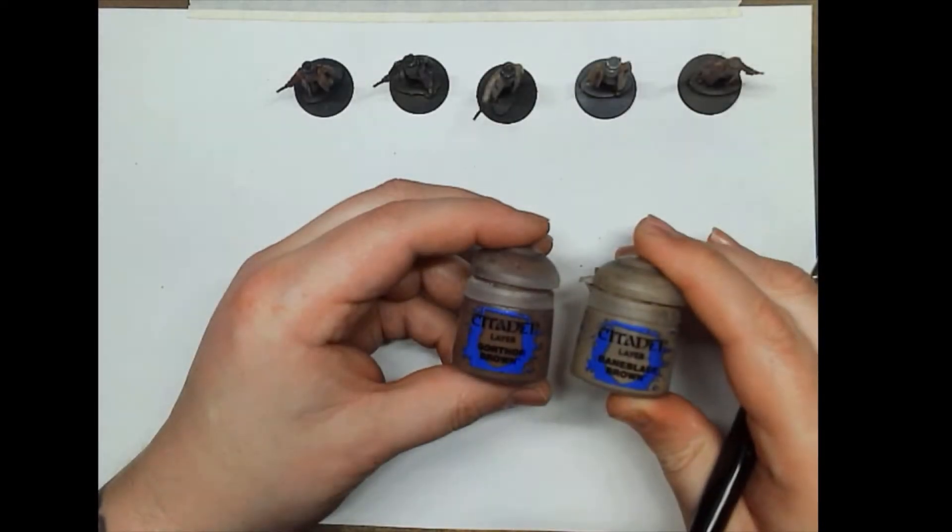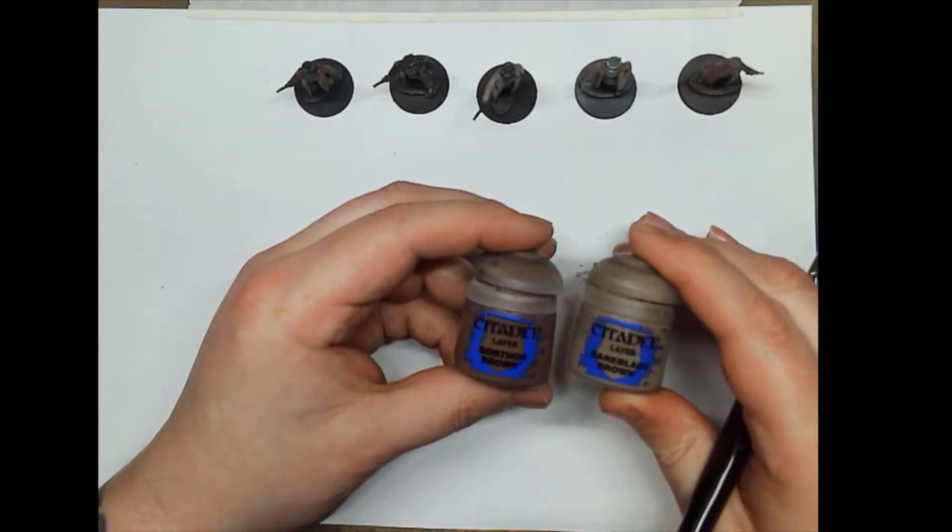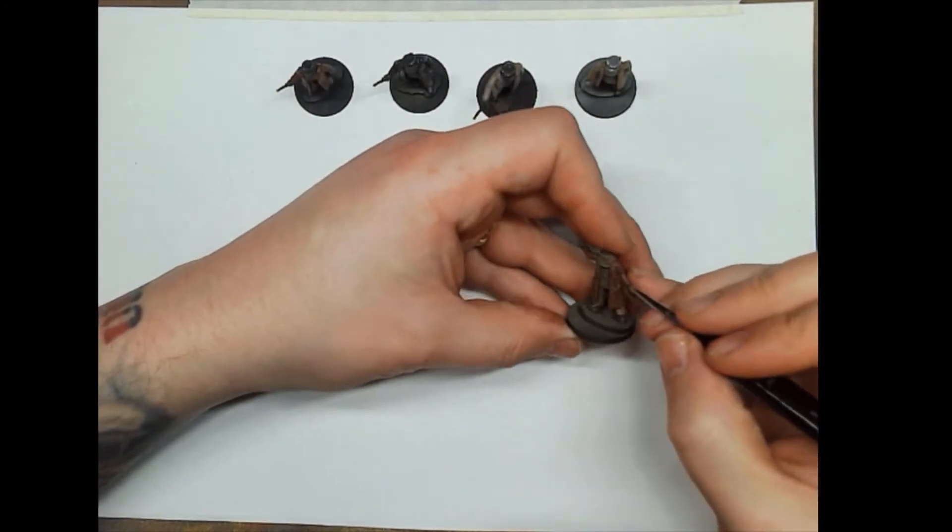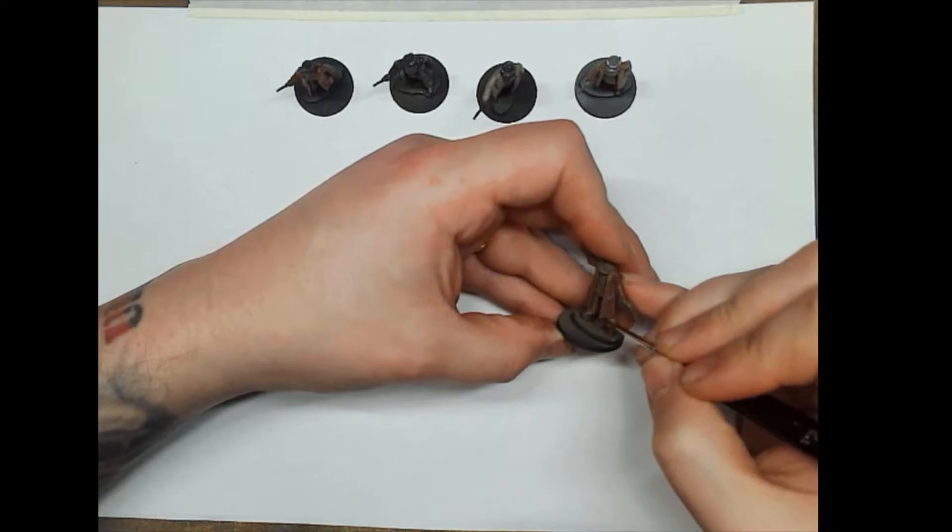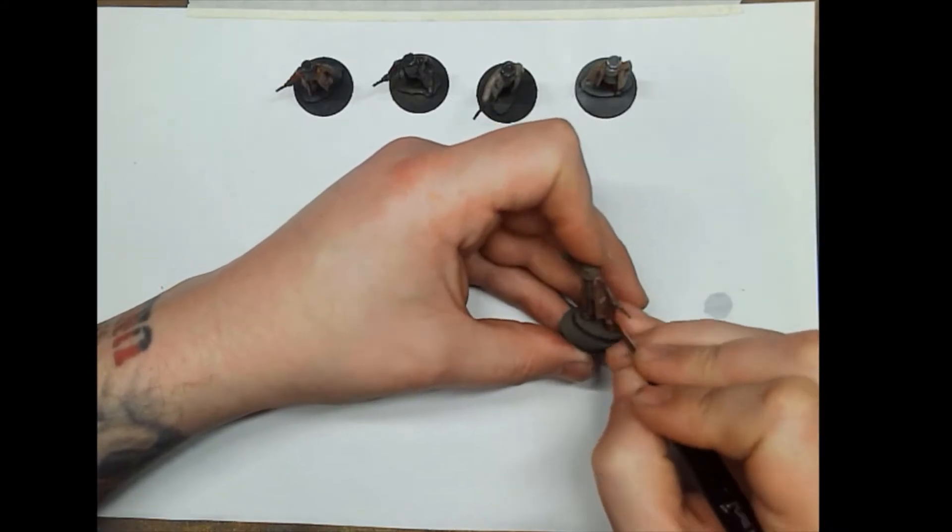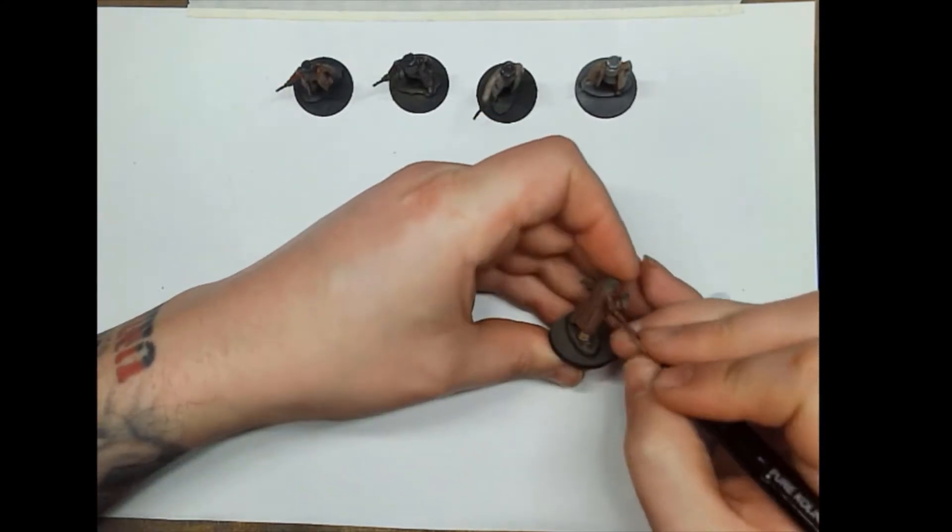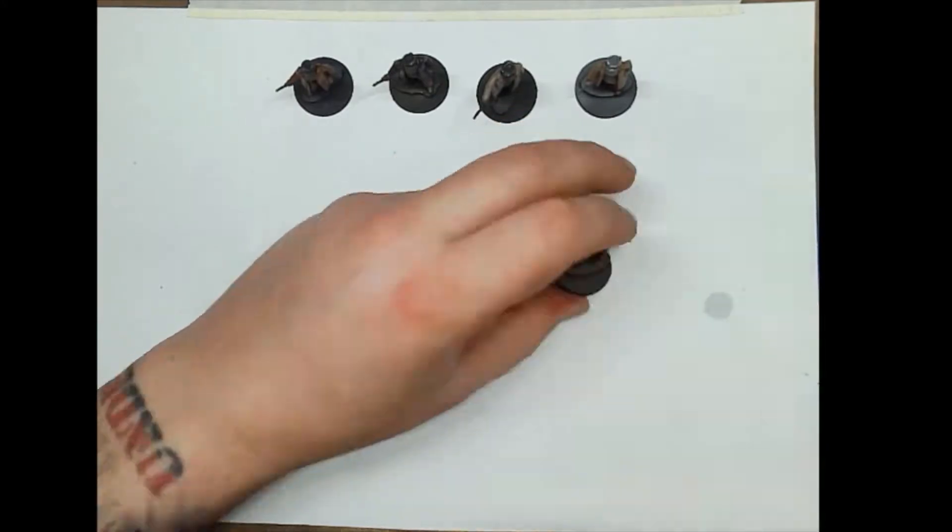Now highlighting Gorthor with Bane Blade Brown. So anything that's been painted in Gorthor, we can use the Bane Blade Brown to highlight. Just remember with all these highlights to water your paints down so that you get a nice smooth consistency and a slight translucence, so you can get a nice even blend on anything you get highlighted.